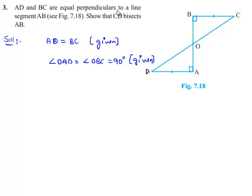Now, we need to prove that CD bisects AB. That means we have to prove that OA is equal to OB.